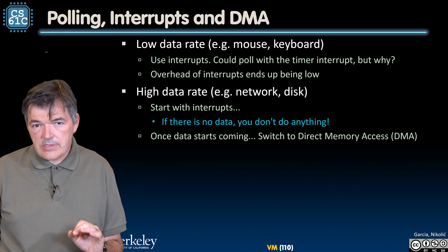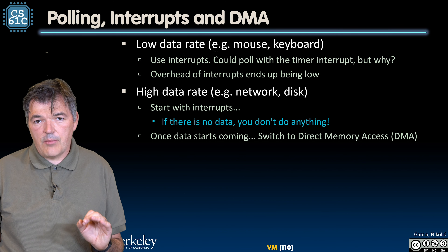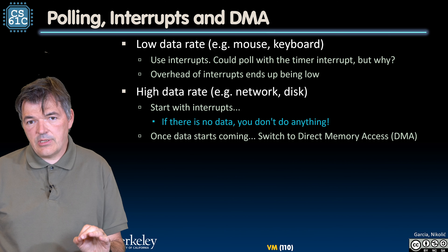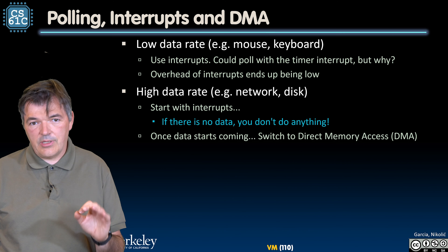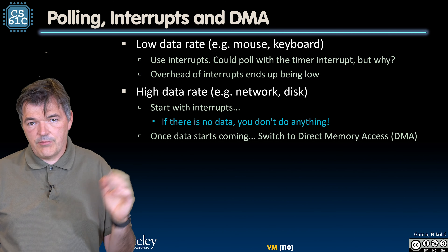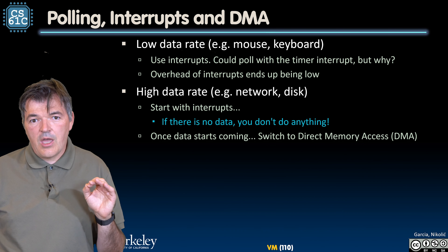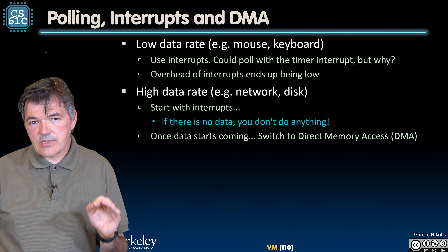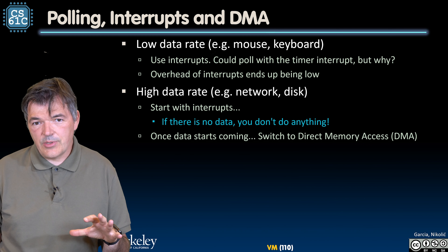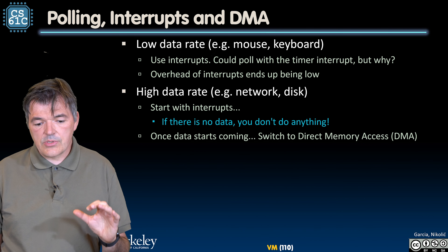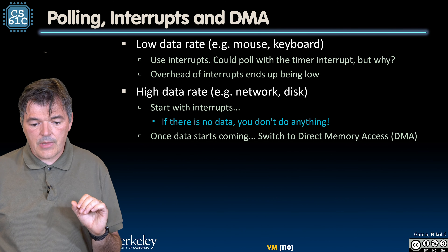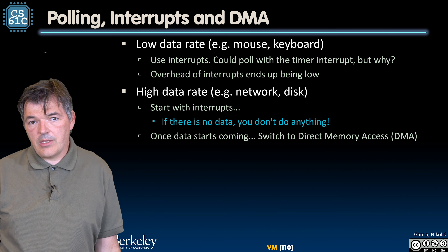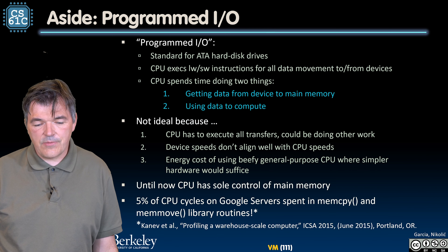For devices that produce a lot of data, a more common approach is to initiate the data transfer with an interrupt when they have something to send — for example, receiving a packet over Wi-Fi. But when there is a lot of data to transfer, it is done using a different mechanism called direct memory access, or DMA, which we will cover in the next section.